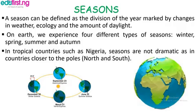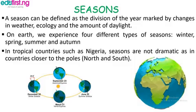We note that in tropical countries such as Nigeria, seasons are not as dramatic as in countries closer to the poles. We don't experience the four aforementioned seasons; we usually only experience dry and wet seasons — that is, rainy and dry season.